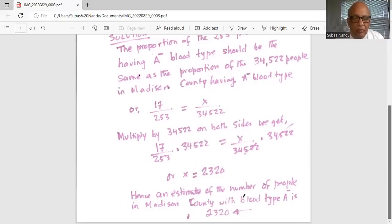Hence an estimate of the number of people in Madison County with blood type A- is 2,320.